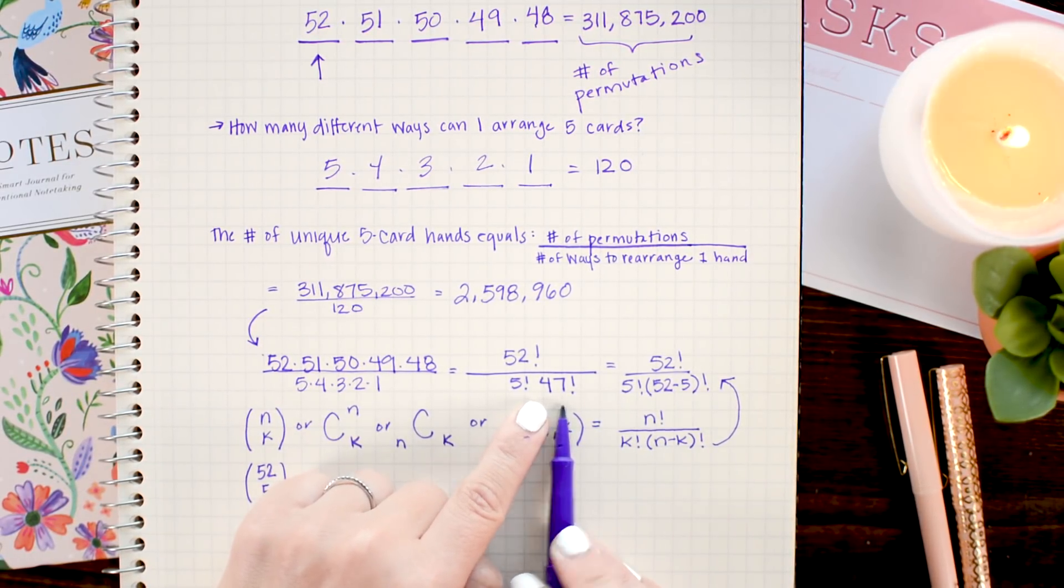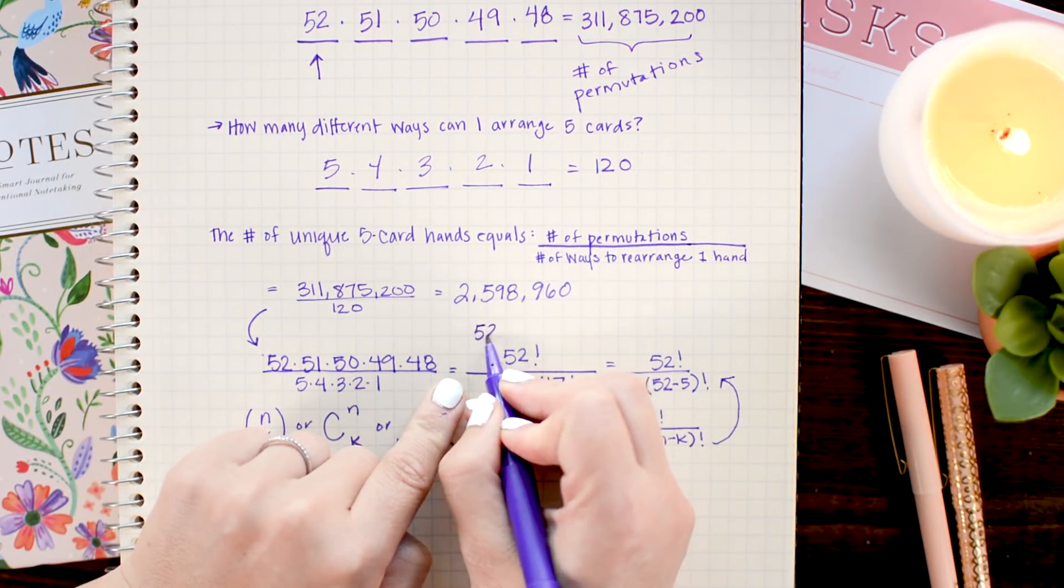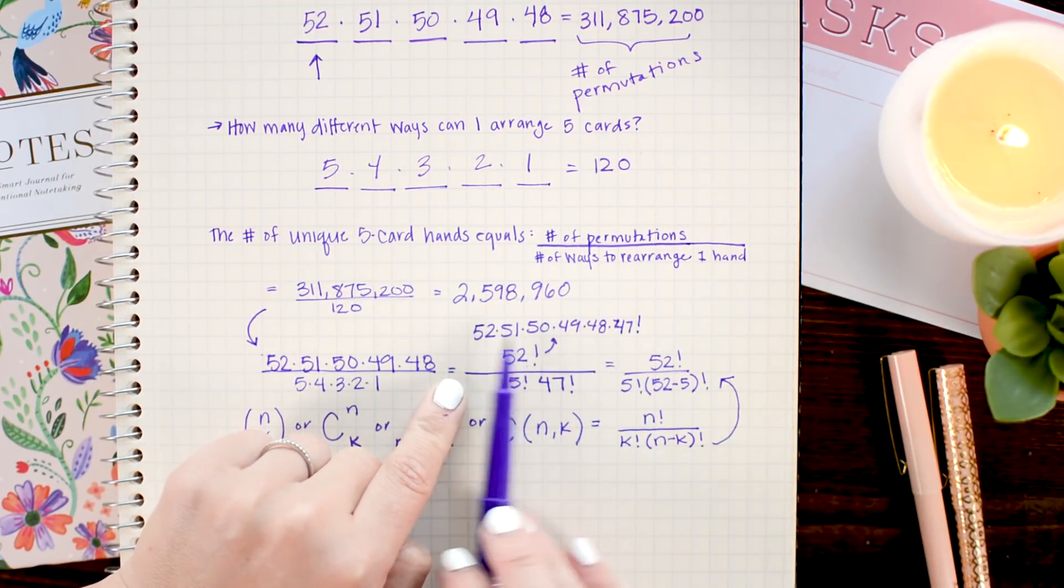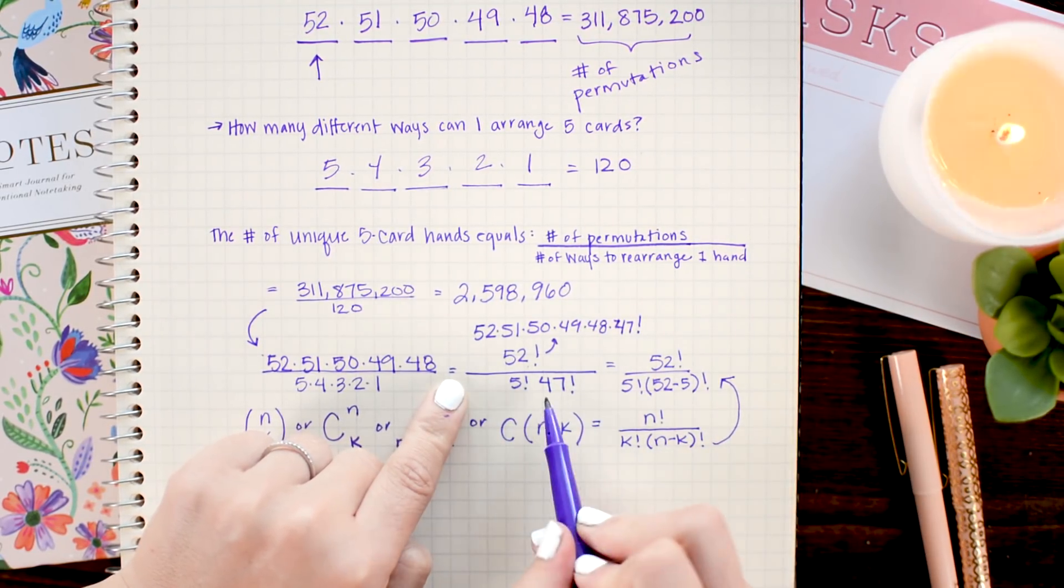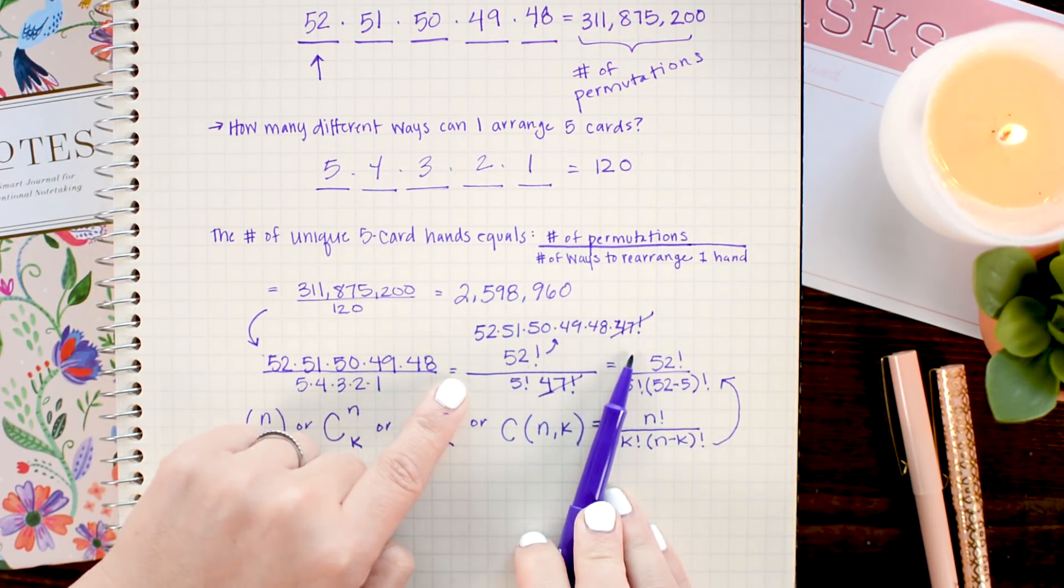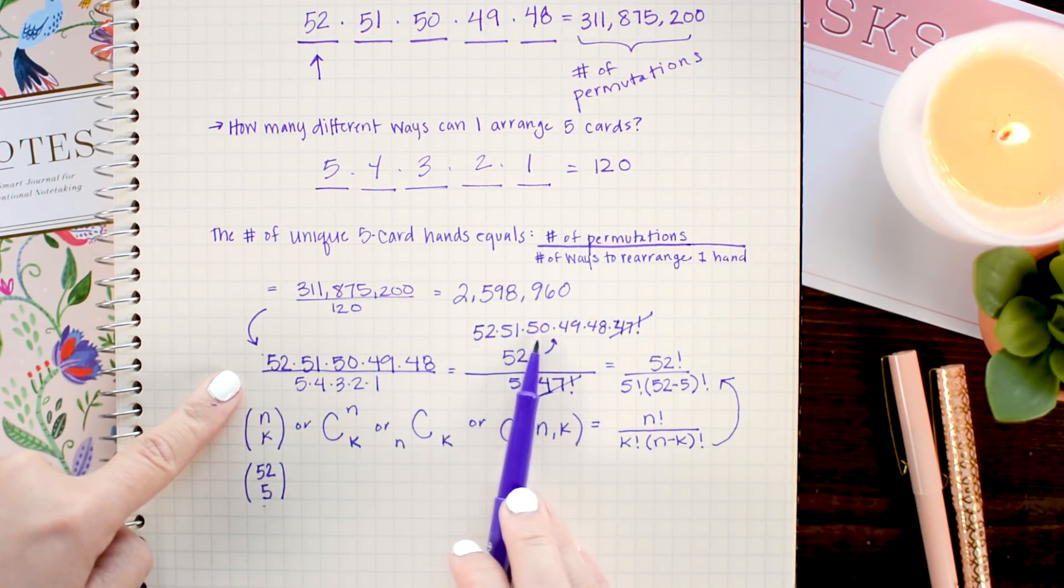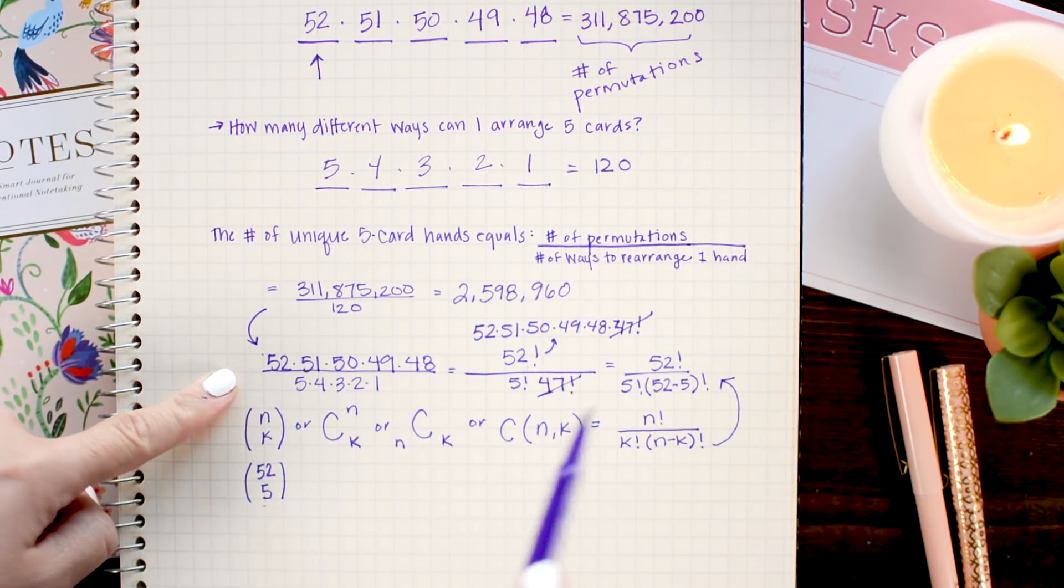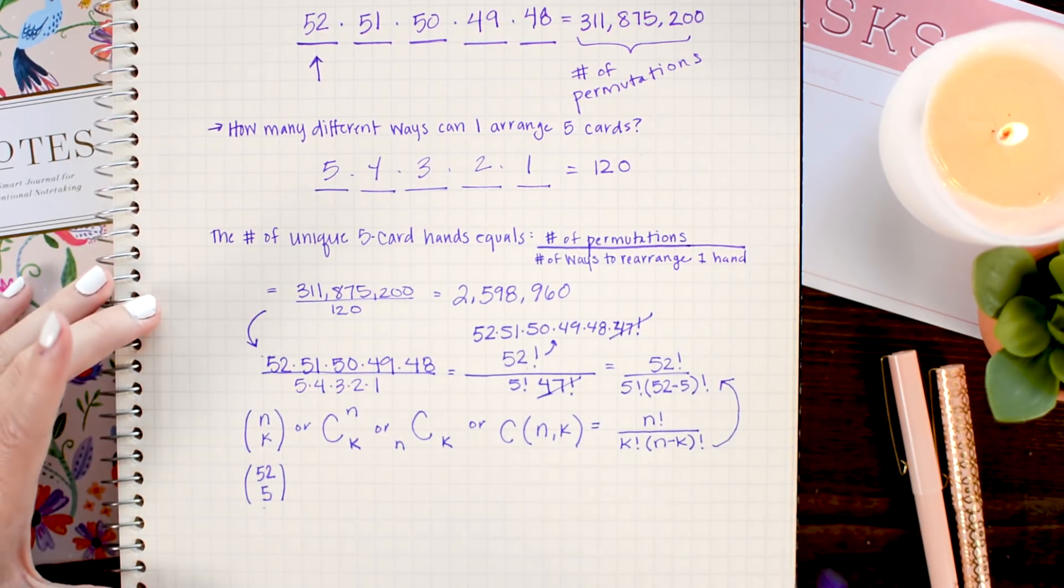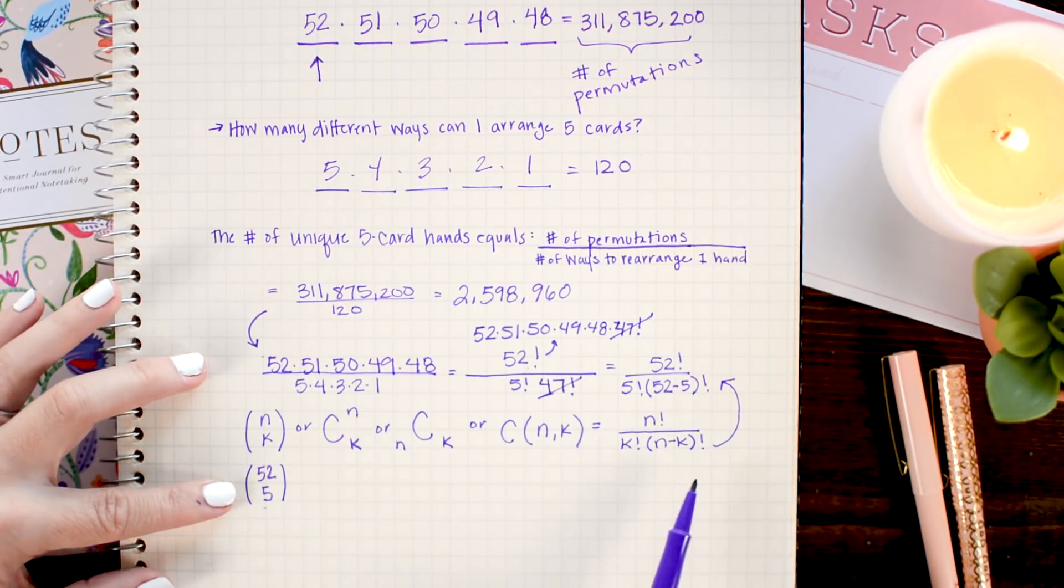We would subtract these to get 47 factorial. And then we could rewrite 52 factorial as 52 times 51. And because everything is multiplication, this 47 factorial would cancel out with this 47 factorial. Leaving us with 52 times 51 times 50 times 49 times 48 all over 5 factorial. And that's really awesome because we have derived the combinations formula.